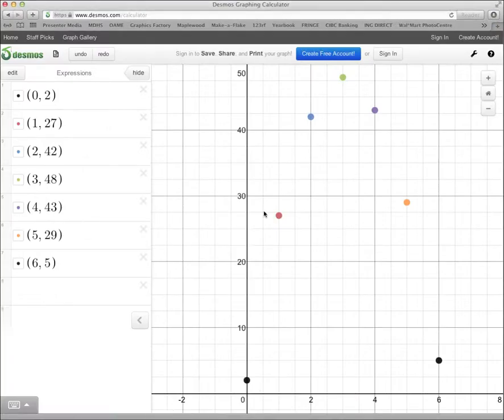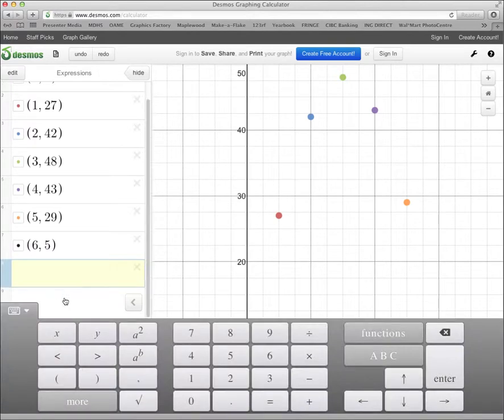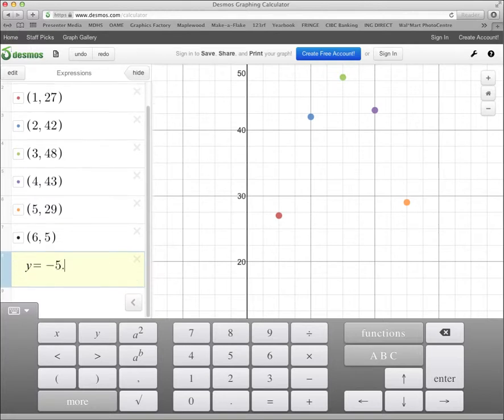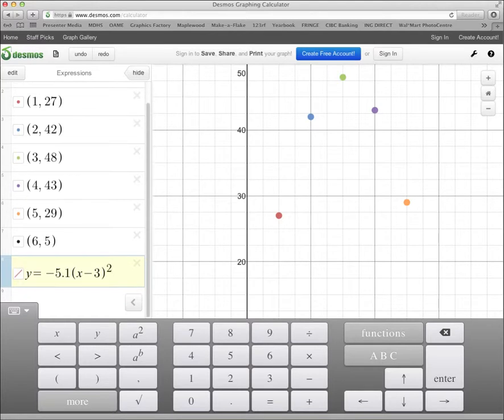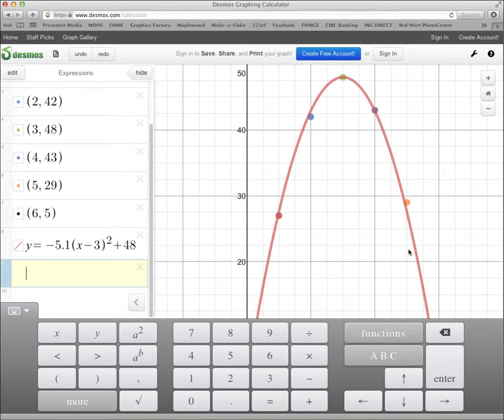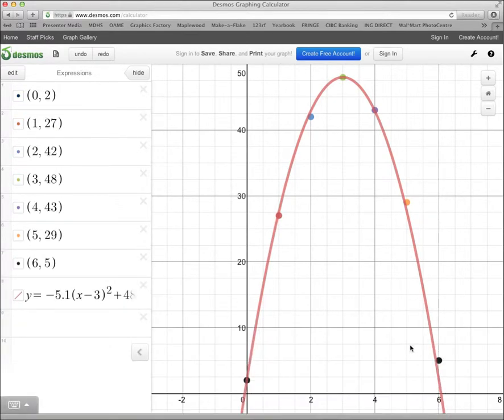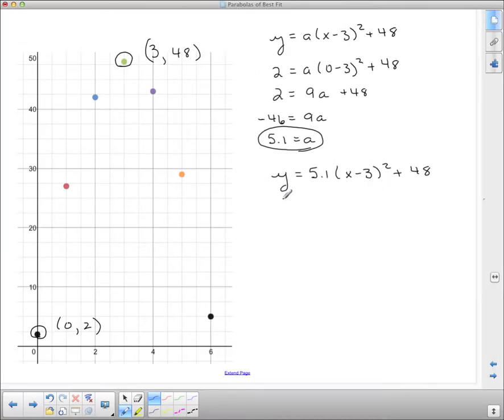So it looks like our equation is y equals negative 5.1(x minus 3) squared plus 48. Now let's see how that fits our parabola. I'm going to go back into Desmos, and I'm going to enter that. That was y equals negative 5.1(x minus 3) squared plus 48. How does that fit our parabola? That actually looks pretty good. If that didn't happen to fit it very well, what I could do is pick a different point on the parabola and try it again. And then just kind of take an average of the a values.